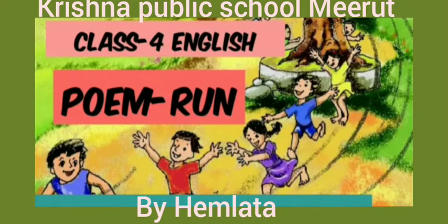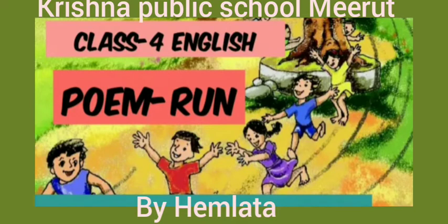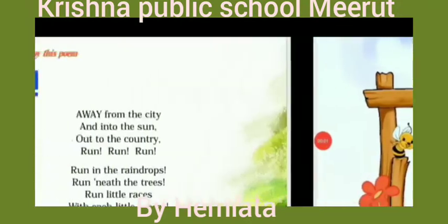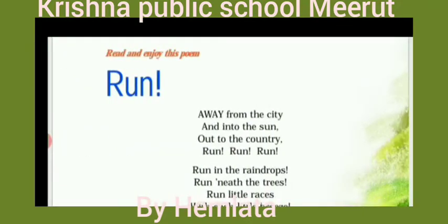Good morning everyone. Myself Emrata. I will introduce a poem RUN from NCIT English Marigold, Class 4. Students, I am going to explain the poem RUN. RUN means Dharna — running. We have to run in different ways. I think you will enjoy this poem a lot.